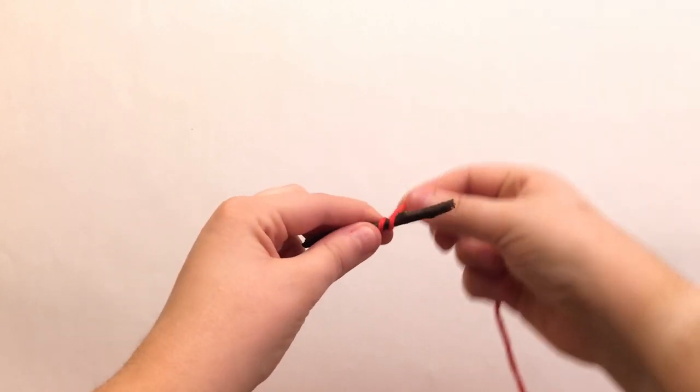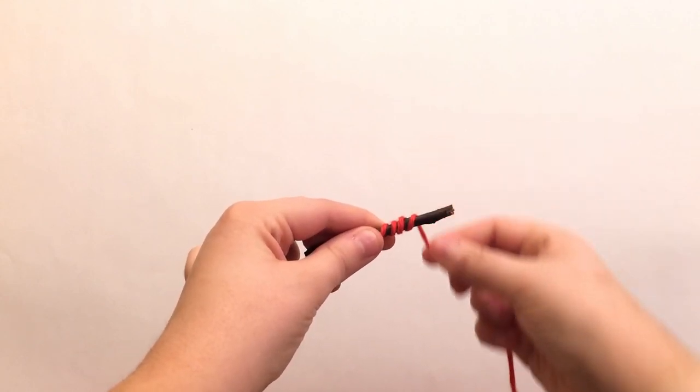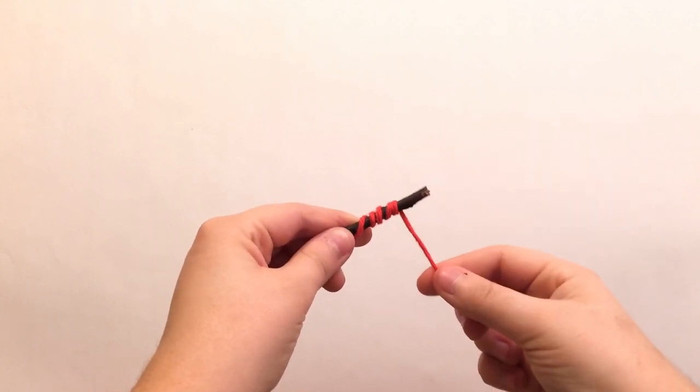You can show the child how they can wind the string around the stick. Then, you can ask them to try.